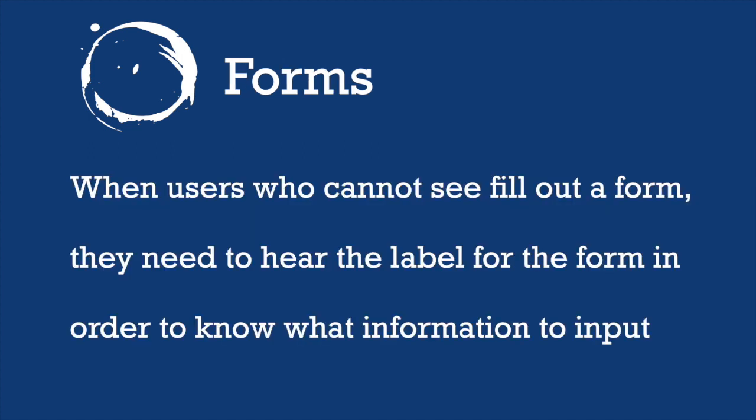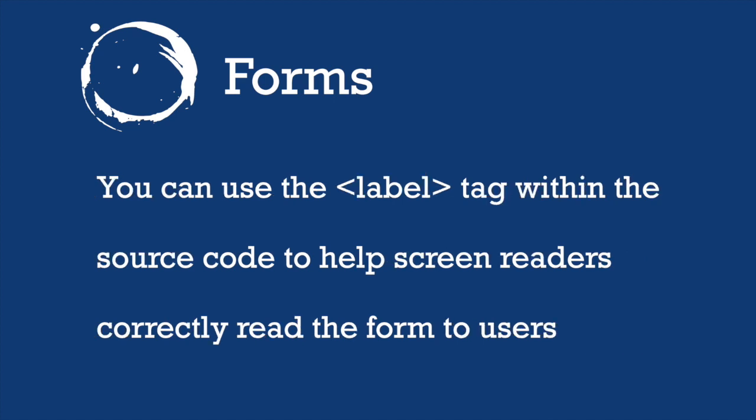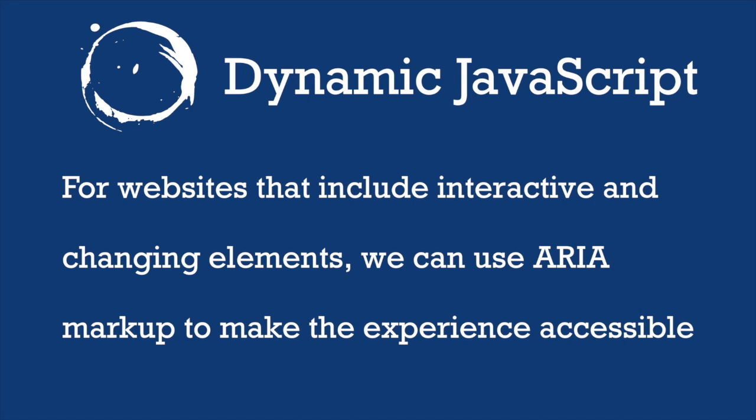We can now discuss the ninth element of Universal Design for the Web: forms. Most of us use forms quite a bit to fill out applications and shop online. We must keep in mind that when users who cannot see fill out a form, they need to hear the label for each form field in order to know what information to input. You can use the label tag within the source code to help screen readers correctly read the form to users. This added formatting within the source code will not affect the experience of people not using a screen reader, so there's no reason not to do it.